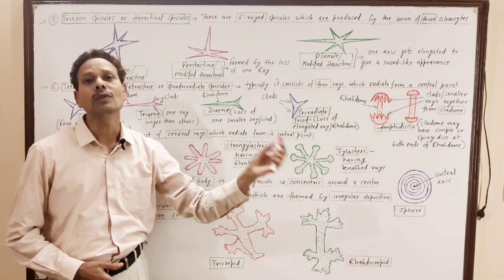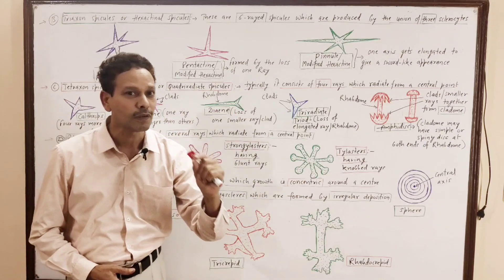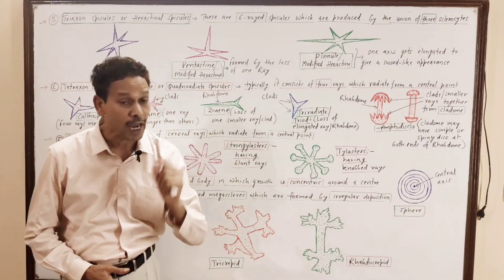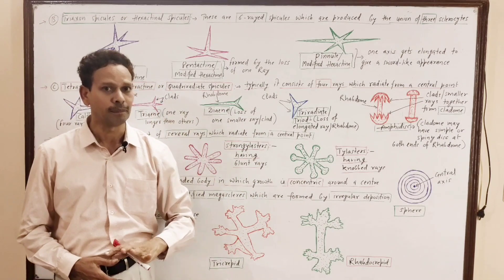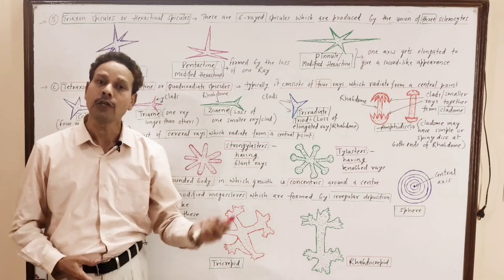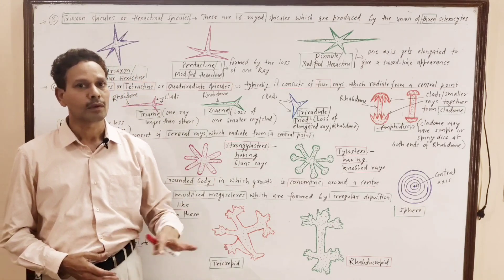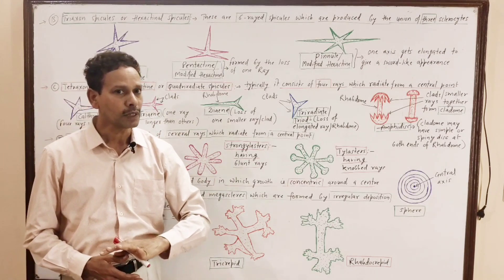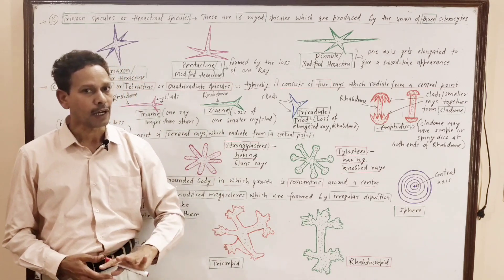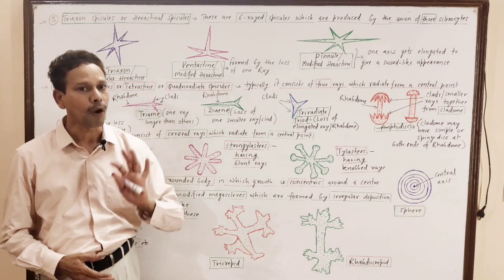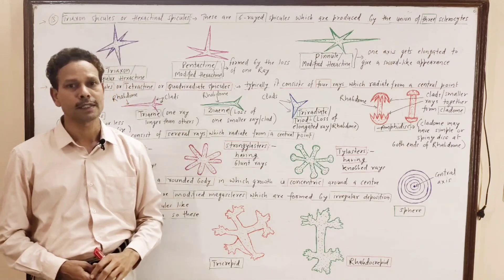Mainly the spicules are classified on the basis of shape and structure. On the basis of their shape, the spicules are of six types: monoaxones, triaxones, tetraxones, polyaxones, spheres, and desmas.